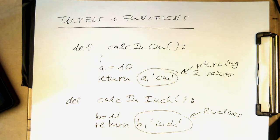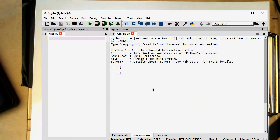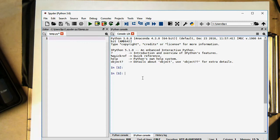And then the caller can process both of these values at the same time. Okay, let's see how this works. So where's Spider? So let's just create first a tuple here.